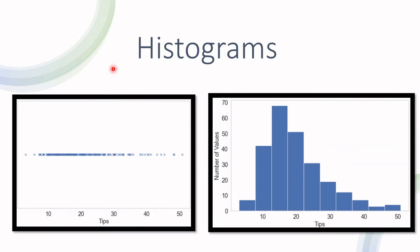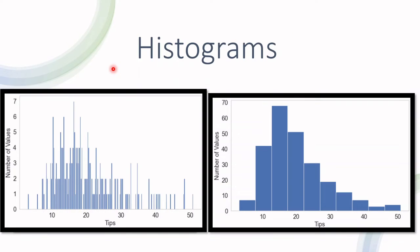That would be hard to interpret. Depending on the amount of bins that you choose, that would make you interpret the data differently. That's where beeswarms come into the picture.